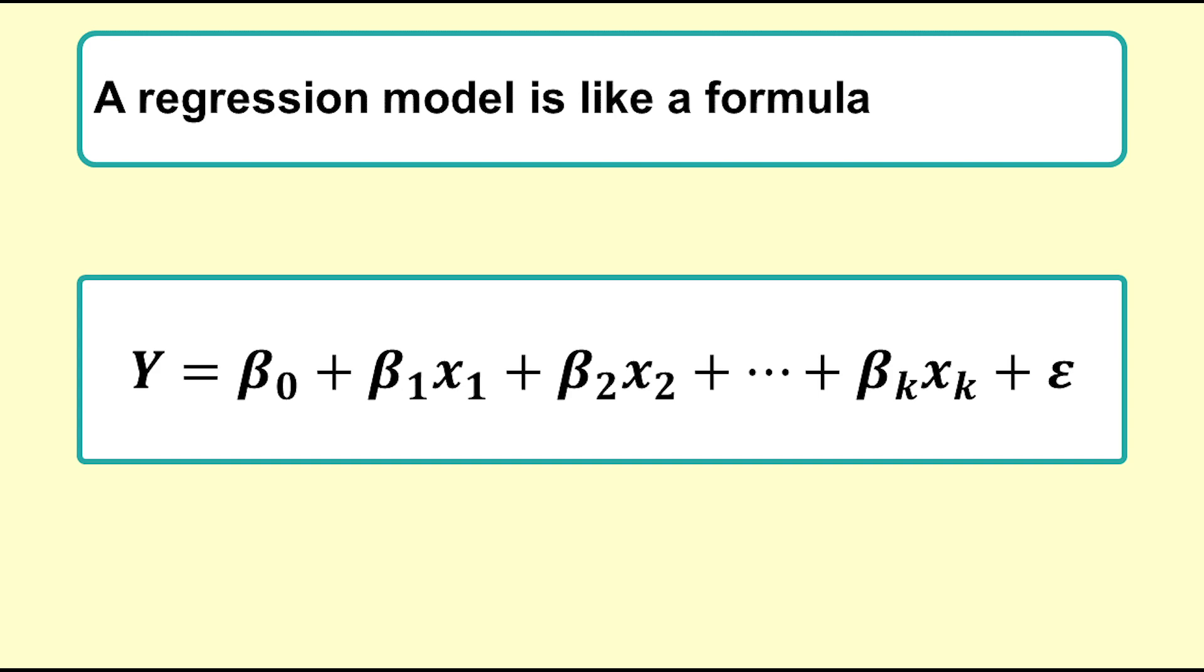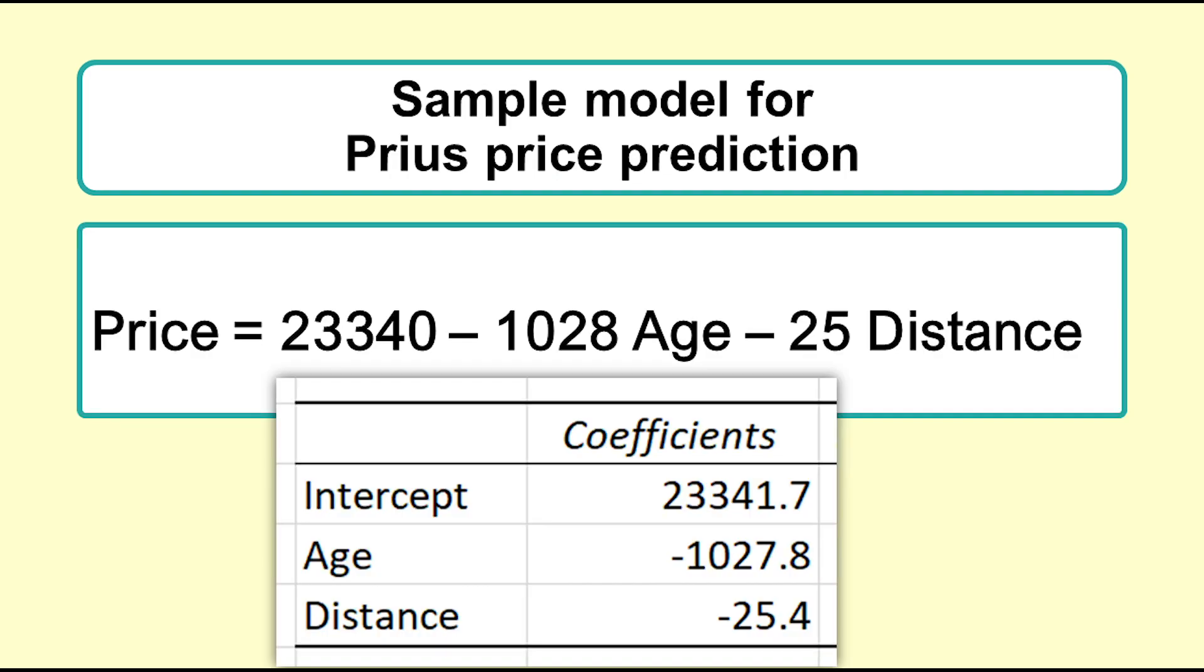A regression model is like a formula. For example, the Prius price prediction model introduced in the overview video was price equals 23,340 minus 1,028 age minus 25 distance. The values of the coefficients, negative 1,028 and negative 25...